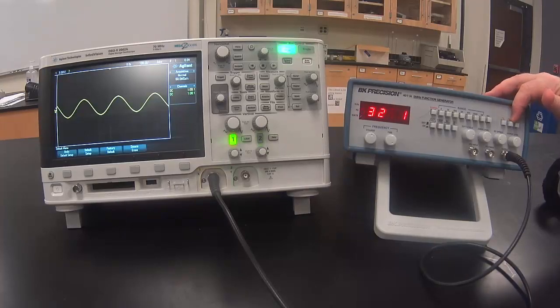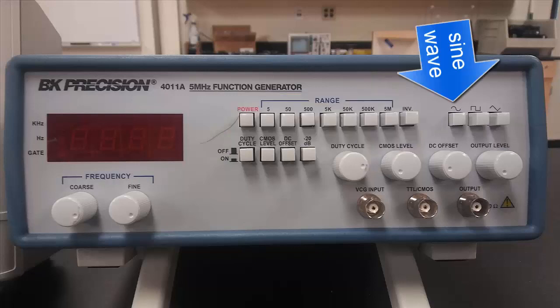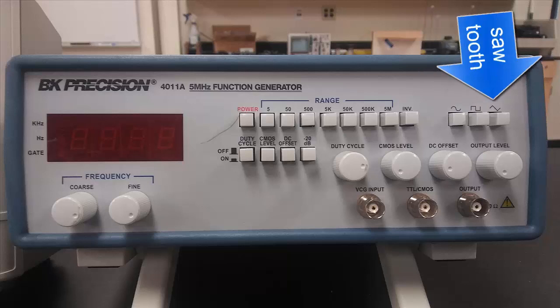These three buttons control the type of waveform that is being output. The first one outputs a sine wave or what's called AC current. The second one is called a square wave which we will use to mimic an open and closed switch in the RL and RC circuit labs. The last one is a sawtooth wave which we won't be using in our labs.